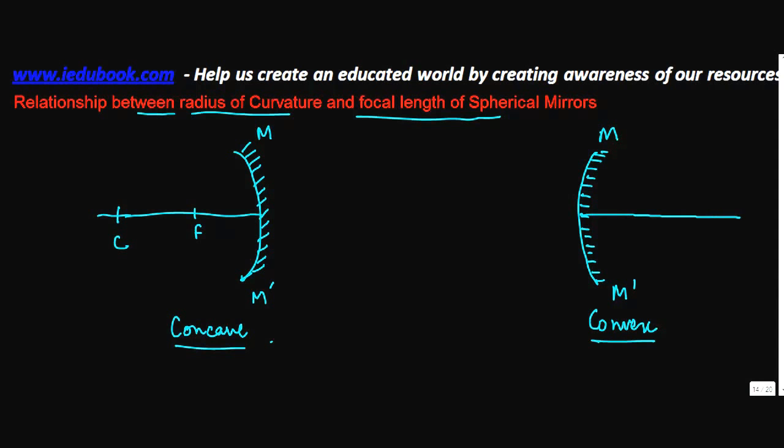Similarly, in the case of the convex mirror, these two points are reflected something like this. You have the pole here, then you have various rays which are coming.